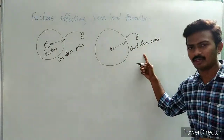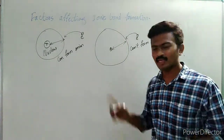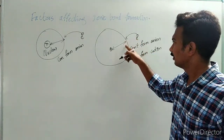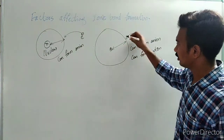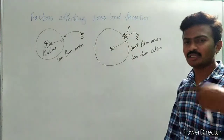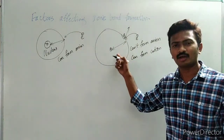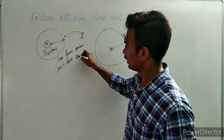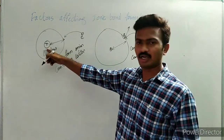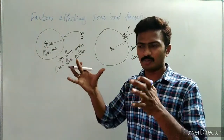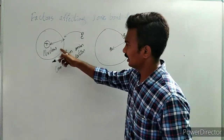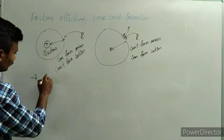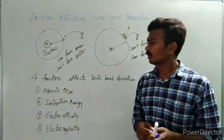A smaller atom can form an anion, while a bigger atom cannot form an anion — it can form a cation instead. As there is no strong attraction between the nucleus and the electron in a large atom, the electron can be lost readily, forming a cation. Whereas a small atom with strong nuclear attraction holds its electrons and forms an anion, not a cation. These are the four factors affecting cation and anion formation.